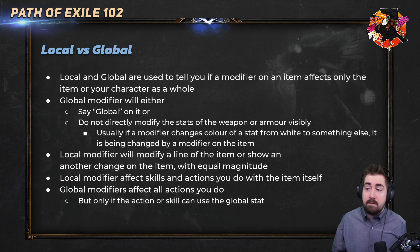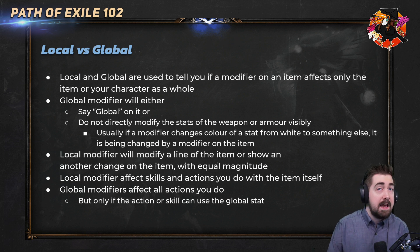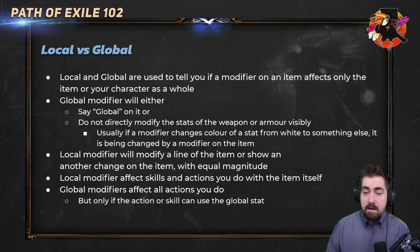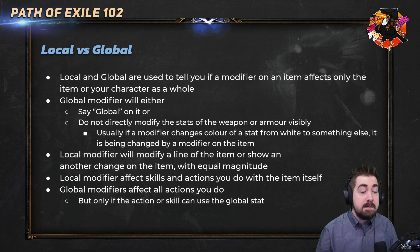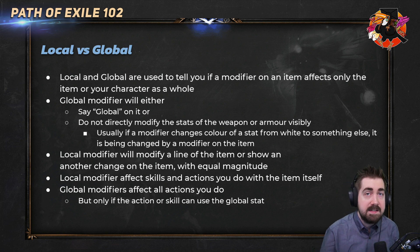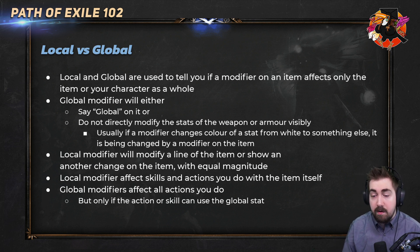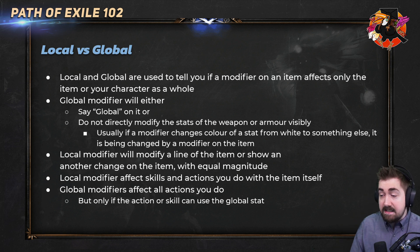Local and global are used to tell you if a modifier on an item affects only the item or your character as a whole. Sometimes it will tell you that it is global, but there are other times — for example, an amulet where it will just say increased energy shield. It would look very similar on the chest, but the chest would be local and the amulet would be global. A global modifier does not directly modify the stats of the weapon or armor visibly.